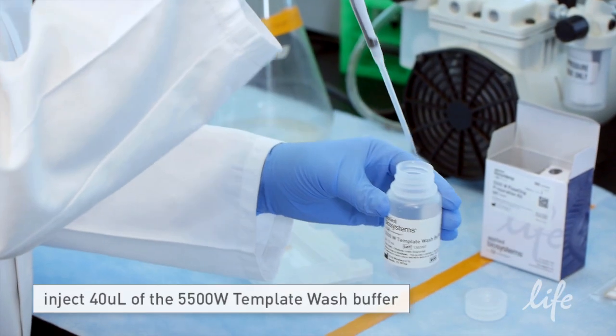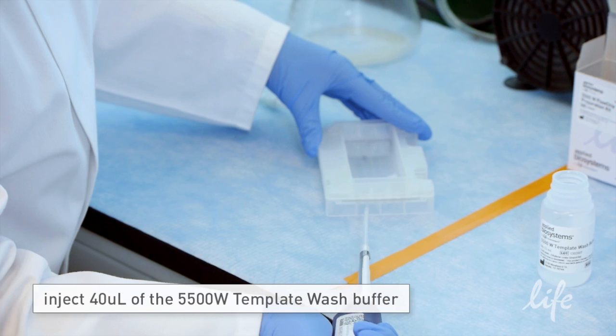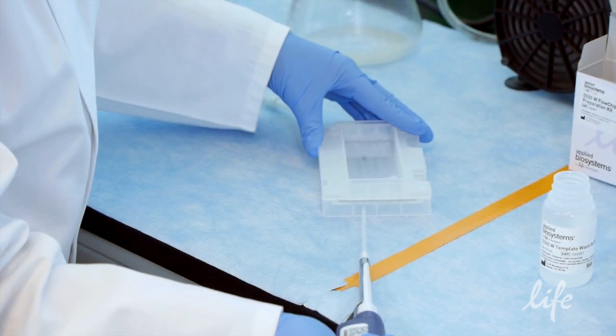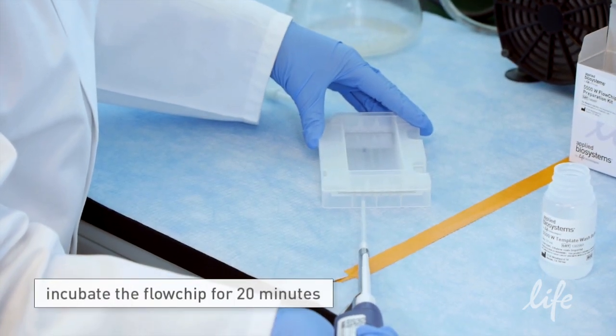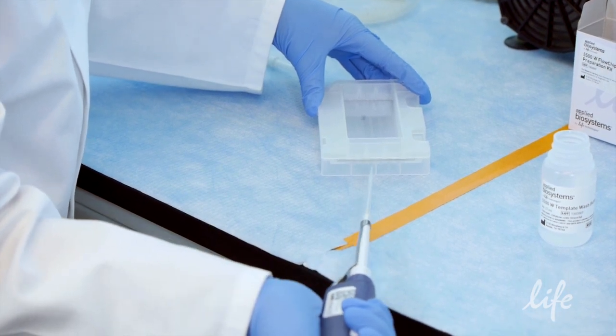Then, inject 40 microliters of the 5500 Wildfire Template Wash Buffer into each of the desired lanes and incubate the flowchip for 20 minutes at room temperature. The flowchip can be incubated for a maximum of one hour.